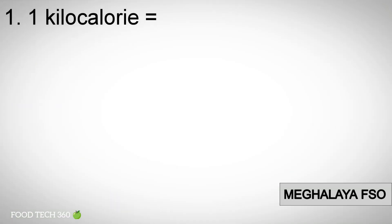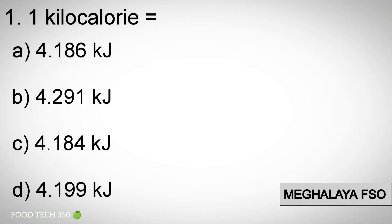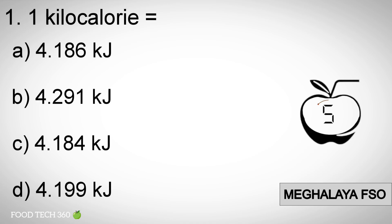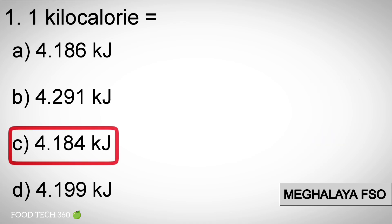Question number 1: One kilocalorie equals — options: A) 4.186 kilojoules, B) 4.291 kilojoules, C) 4.184 kilojoules, D) 4.199 kilojoules. Correct answer: C) 4.184 kilojoules.